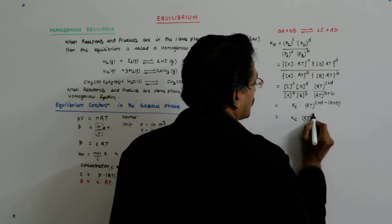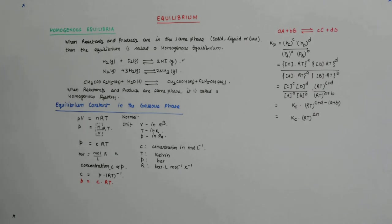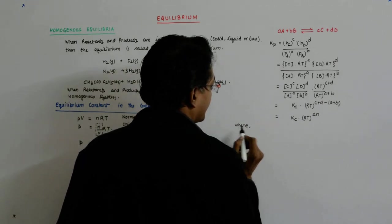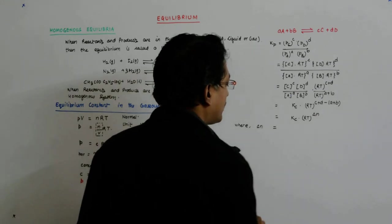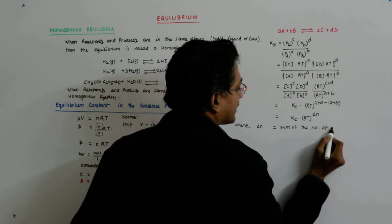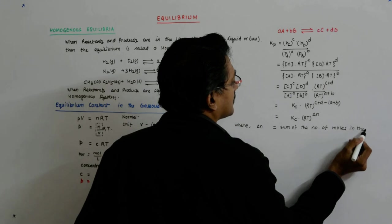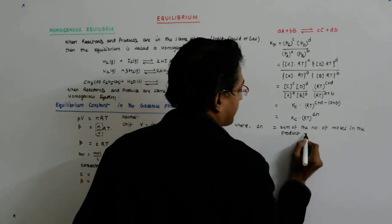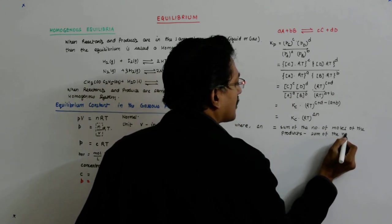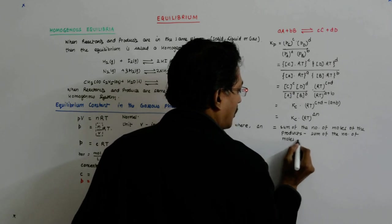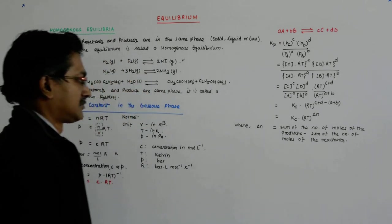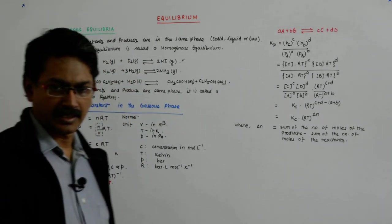Now this is Kc times RT to the power delta n, where delta n is equal to the sum of the number of moles of the products minus sum of the number of moles of the reactants. Correct. So you have to do nothing.